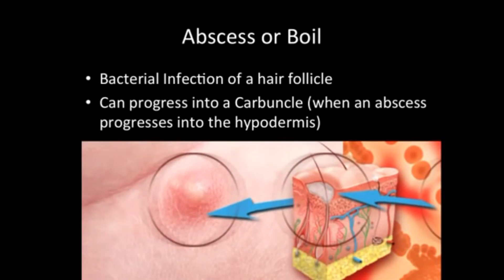Next are abscesses or boils. They're somewhat related to acne, but they're not infected oil glands — it's a bacterial infection of a hair follicle, the supporting cells around a hair, sometimes considered an ingrown hair. It can progress into what's called a carbuncle, when an abscess progresses down into the hypodermis. Abscesses or boils should also be lanced or popped and kept very clean so they can heal properly. These can be painful because of all the pressure built up inside the skin.